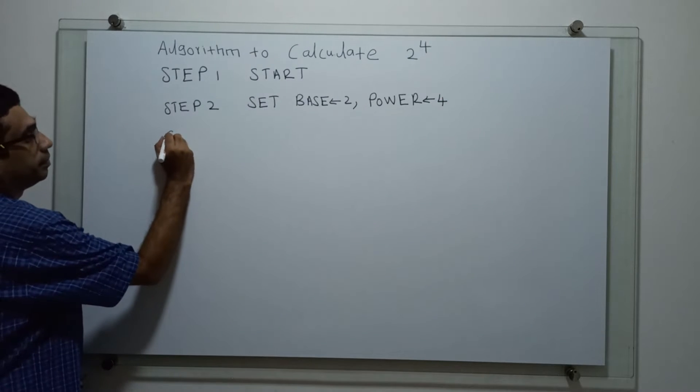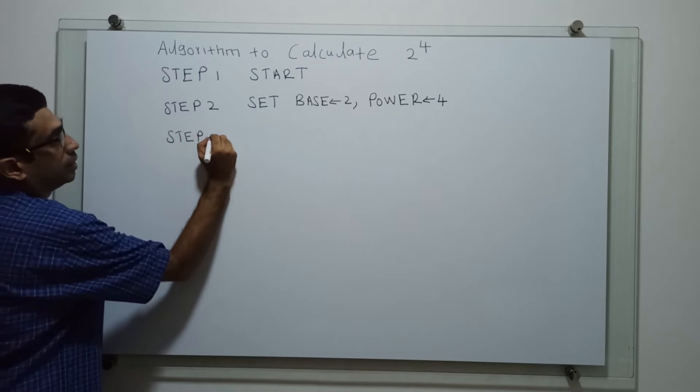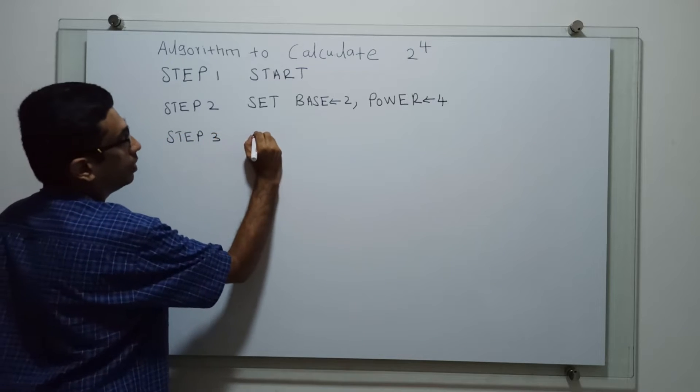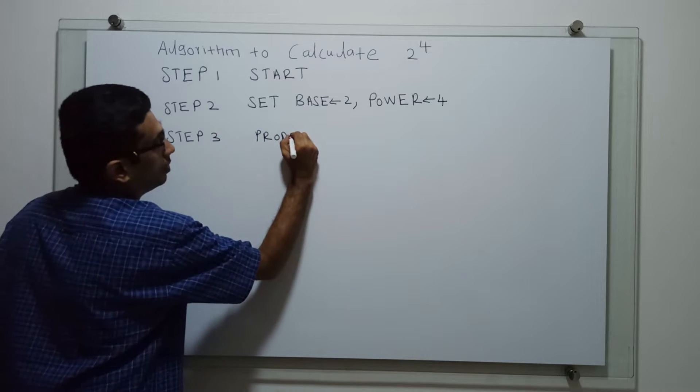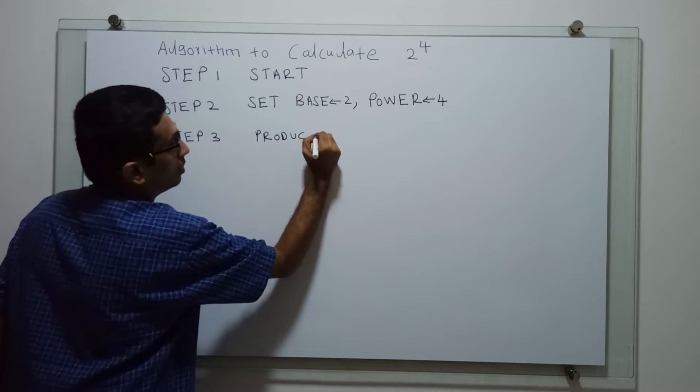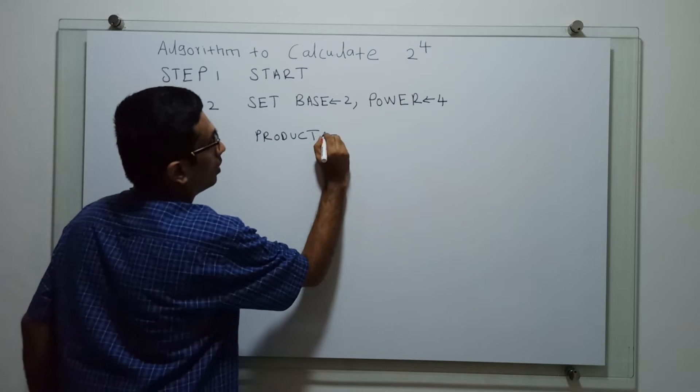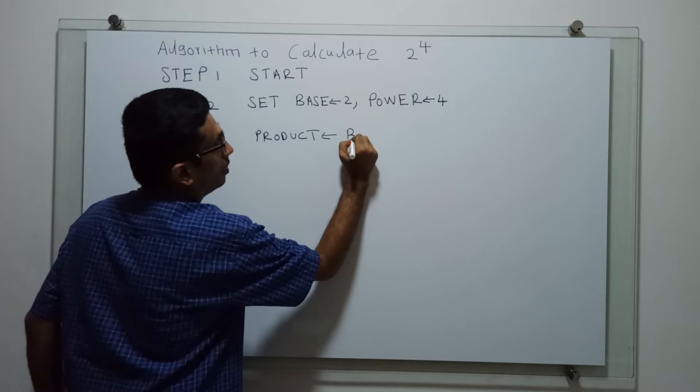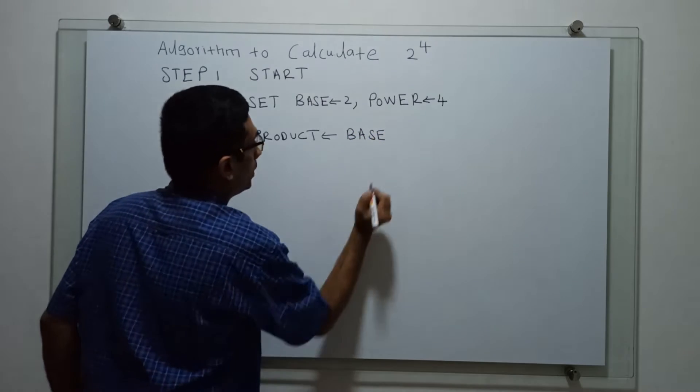Step 3, so product is a variable. Product equal to base.